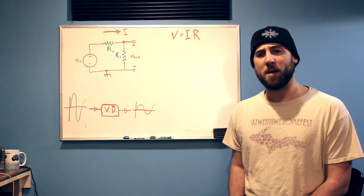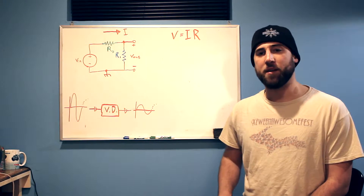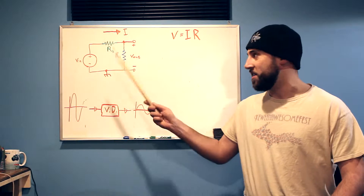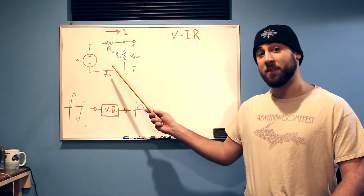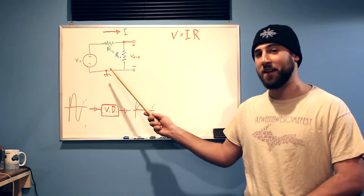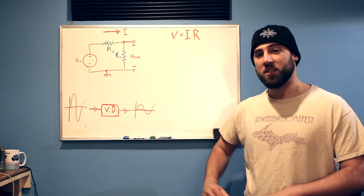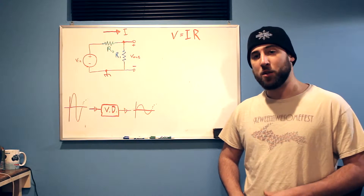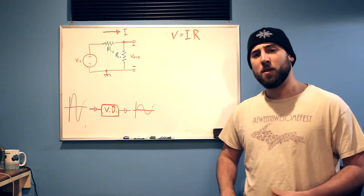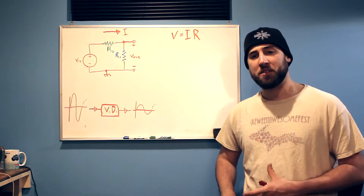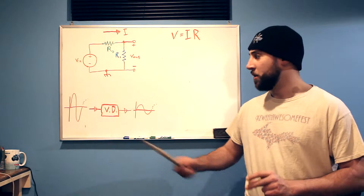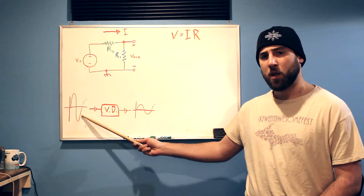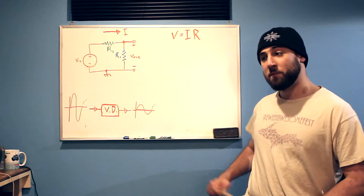Spoonness here to tell you all about voltage dividers. Now what's a voltage divider? Well this is a voltage divider. And what does it do? It takes a signal and attenuates it — in other words it shrinks the signal. So if your input looks like this, your output might look like this.